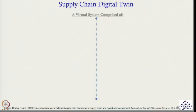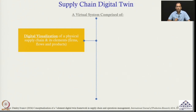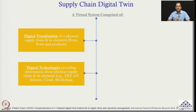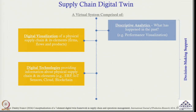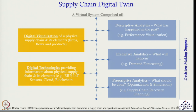A Supply Chain Digital Twin is a virtual system comprised of a digital visualization of a physical supply chain and its elements like firms, flows, and products. It includes digital technologies that provide information about the physical supply chain, such as ERP systems, IoT sensors, cloud, and blockchain. It also helps you take better decisions using descriptive analytics, predictive analytics, and prescriptive analytics. This is the broad framework of a Supply Chain Digital Twin.